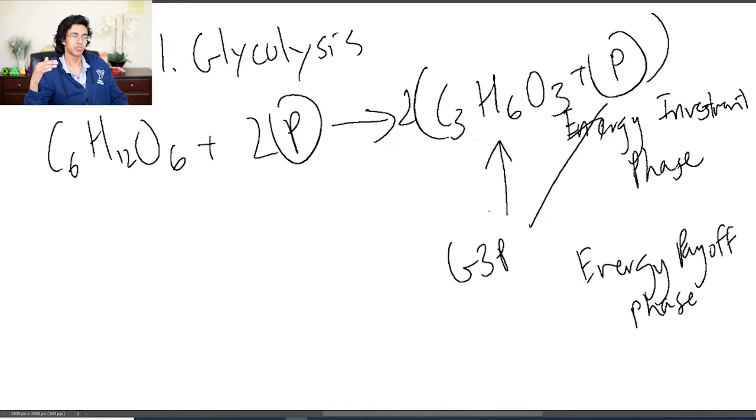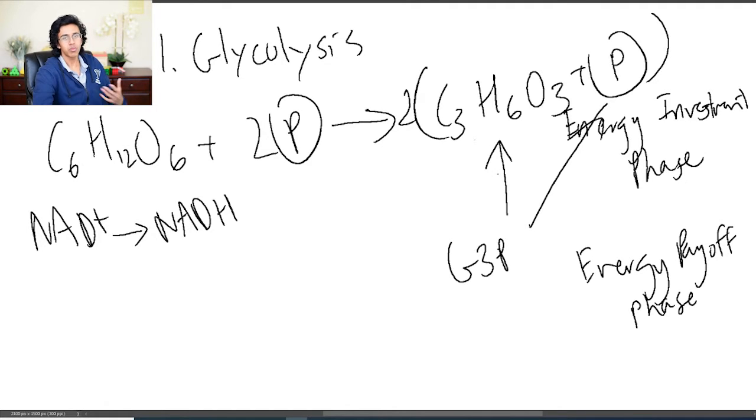This is glyceraldehyde, this is a phosphate. So this is called G3P or glyceraldehyde 3-phosphate. Now the cool thing about G3P is that it has a ton of potential energy and it also has one too many electrons. And you know what happens when something has too many electrons, it gives it off and it releases a ton of energy when it does so.